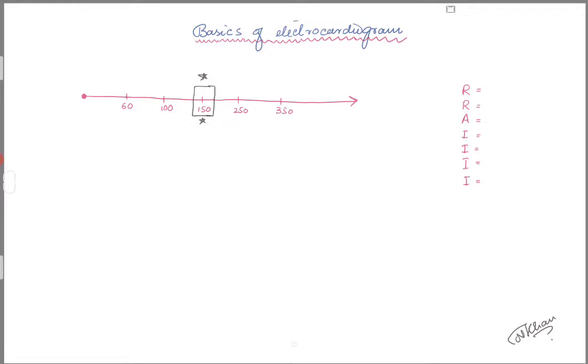The way I look at EKGs is with a mnemonic called RRA and 4i. It's Rate, Rhythm, Access, Ischemia, Injury, Infarction, and Intervals. I guarantee you that if you have a mnemonic like this and touch these things, about 80% of the time you will get all the things in the EKG which you need to know.